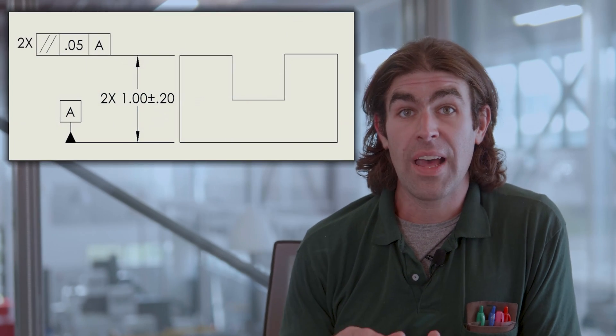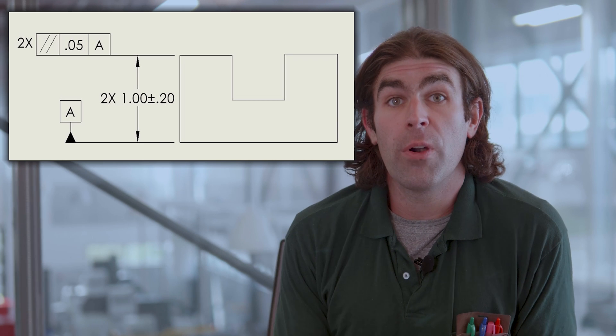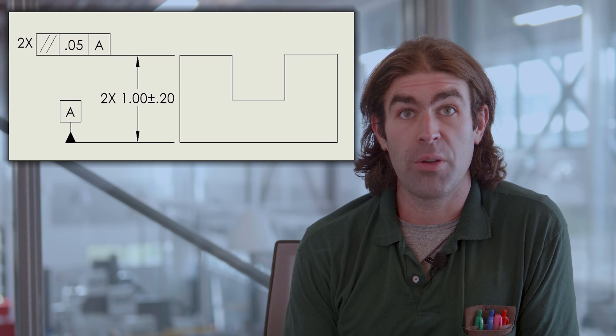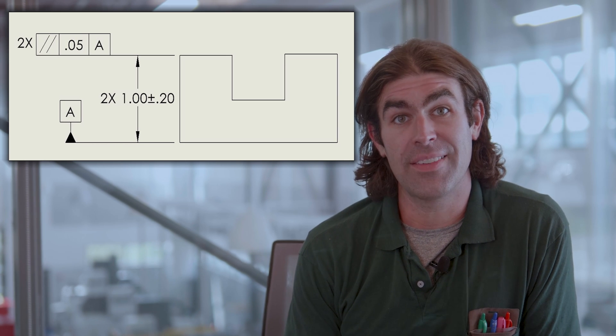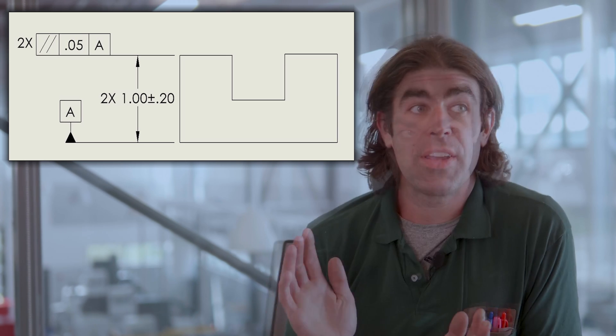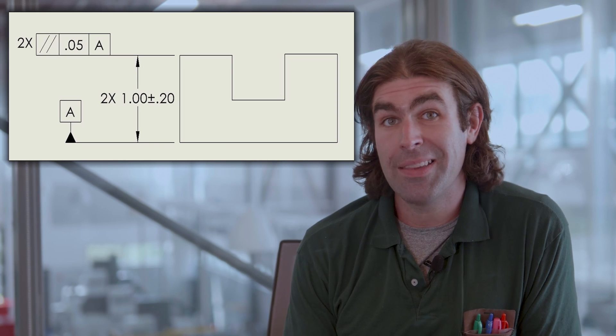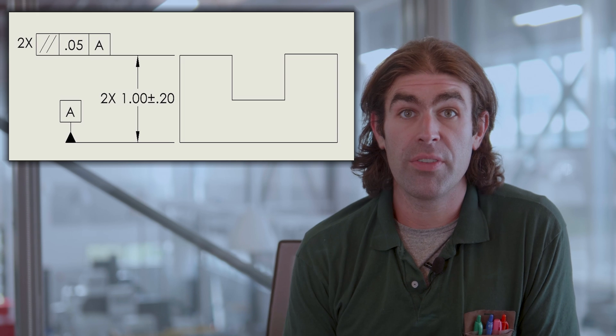The next is parallelism. Parallelism is an orientation tolerance. It's going to give you more control than the flatness and it gives you flatness. When you control something with parallelism you get flatness out of it for free. Same idea, I'm going to put the two times in front of the parallelism to indicate that it applies to both surfaces.